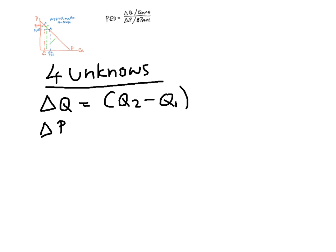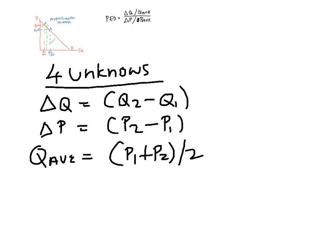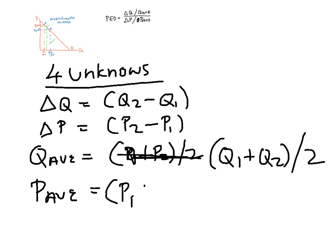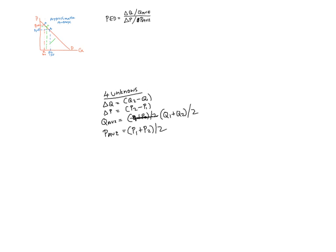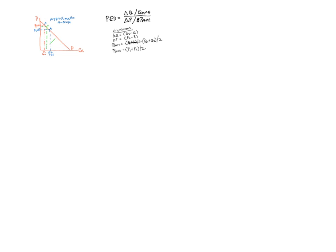Then change in price, P2 minus P1. Average quantity, Q1 plus Q2 divided by 2. If we had P1 plus P2 plus P3 then we divide by 3, but we don't. And average price is P1 plus P2 divided by 2. So what we have here are our four unknowns and we want to solve our four unknowns.